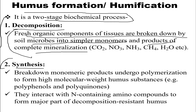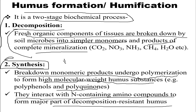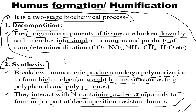The second stage is synthesis. After all complex compounds are broken down into their simplest monomers, the breakdown monomeric products undergo polymerization to form high molecular weight humus substances such as polyphenides or polyquinides. They also interact with nitrogen-containing amino compounds to form the major part of the decomposition-resistant humus. These two steps — decomposition and synthesis — are the key stages of humification.